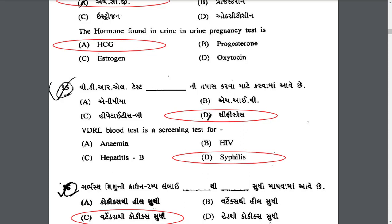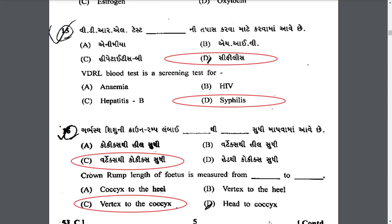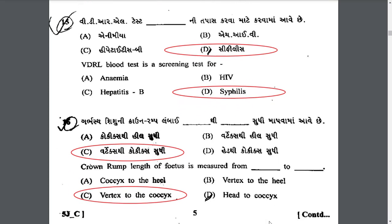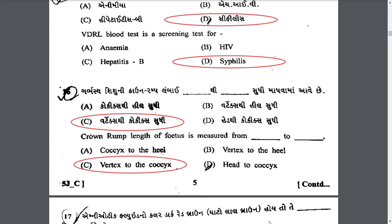Crown rump length of the fetus is measured from which points? Crown rump length of the fetus is measured from vertex to coccyx. The length of the fetus from the top of the head to the bottom of the torso is the crown rump length and it is used for estimation of gestational age.